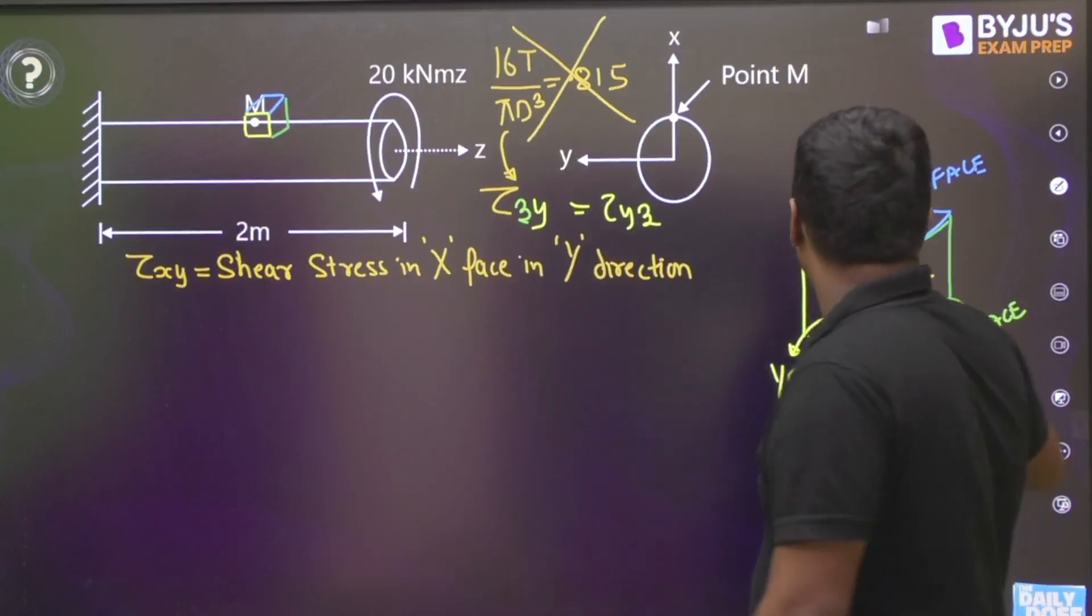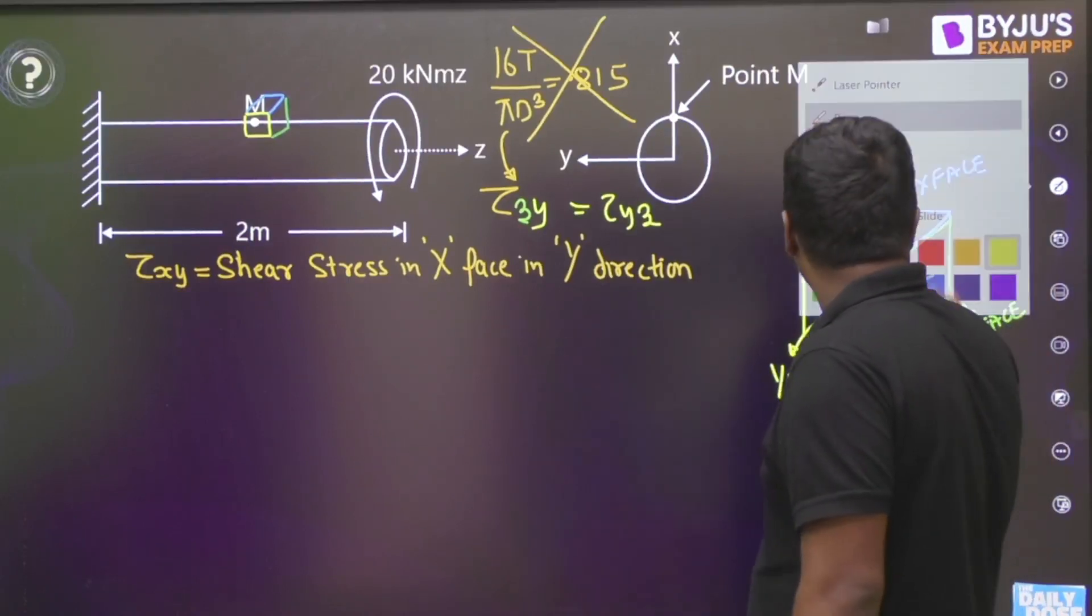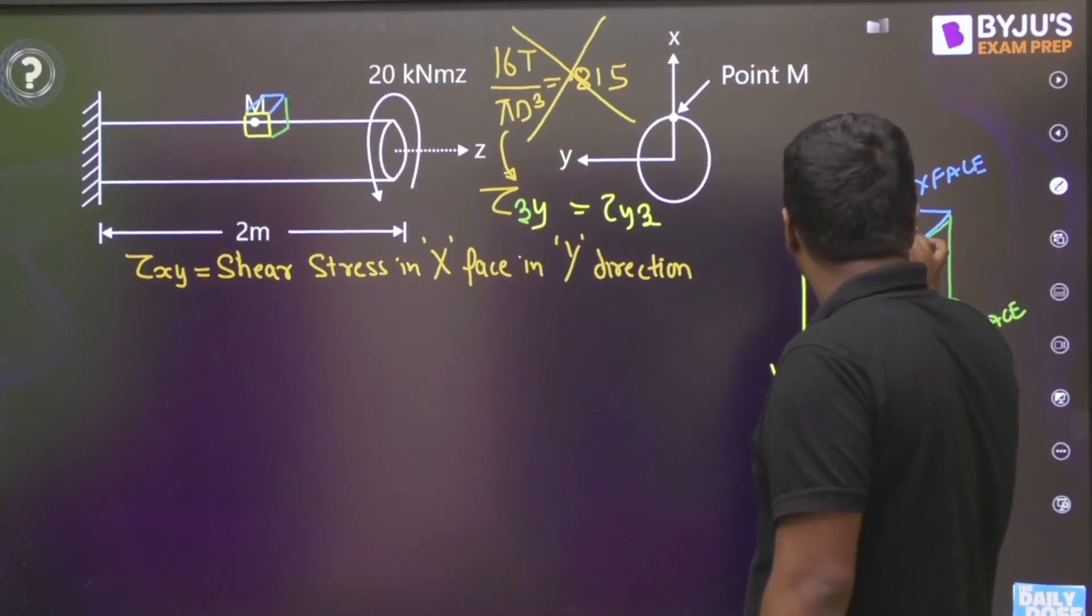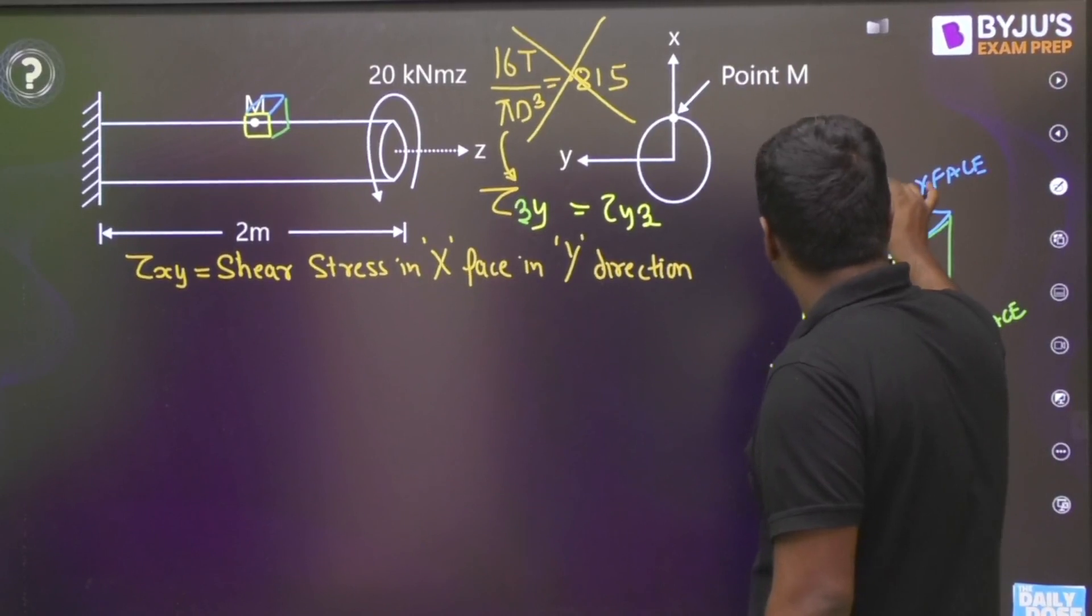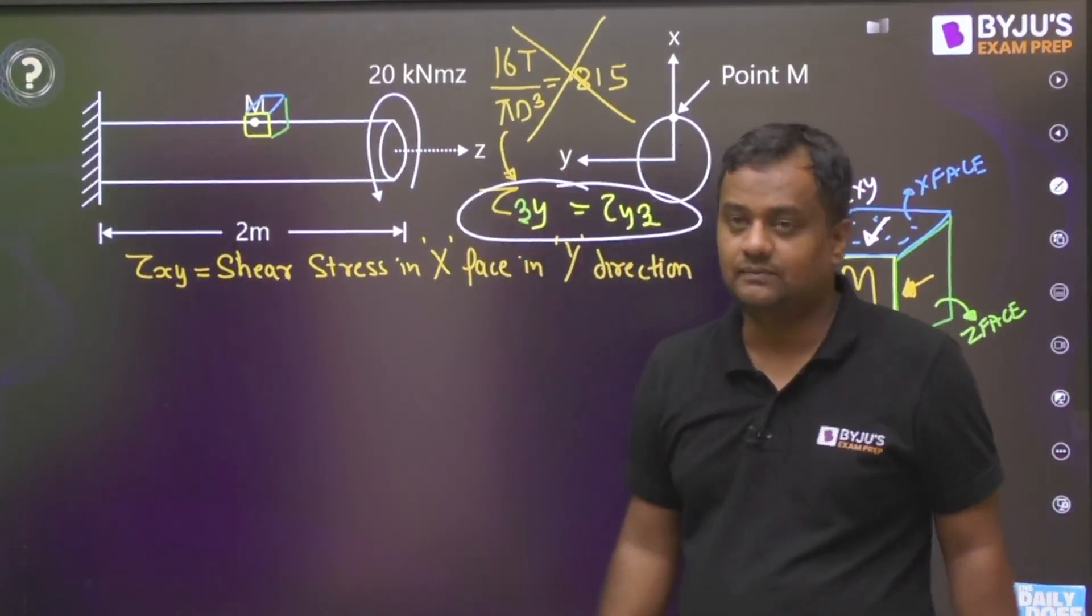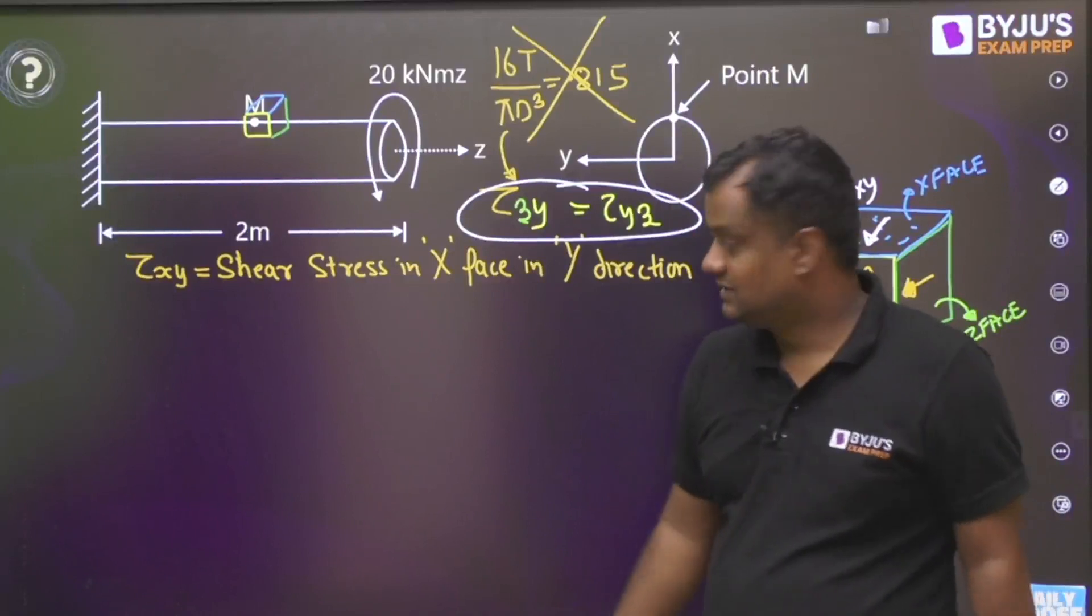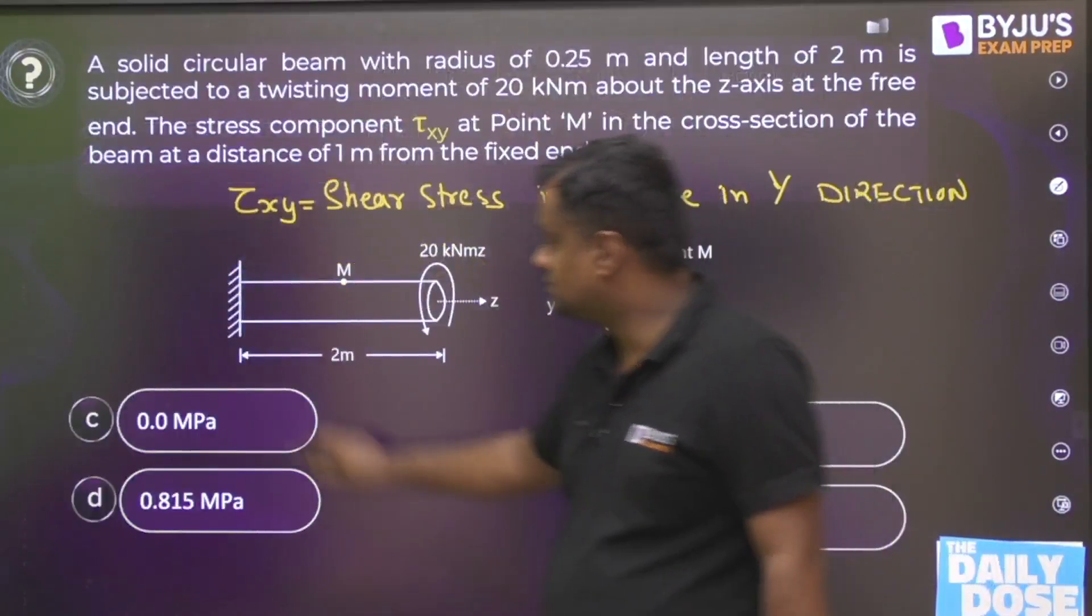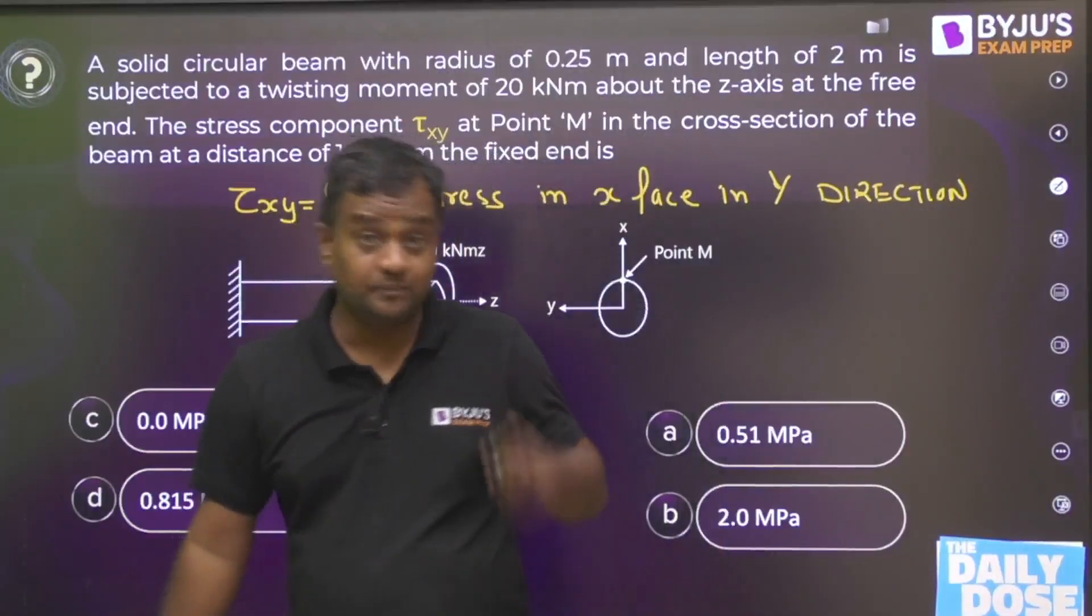In X phase, in Y direction, in this blue one, nothing is coming. Tau_XY is in X phase in Y direction. This is not coming. Yes, shear stress is complementary, so due to tau_ZY, tau_YZ will come. Tau_XY will not come, so the correct answer will be 0. I hope this mistake you will not be doing in future.